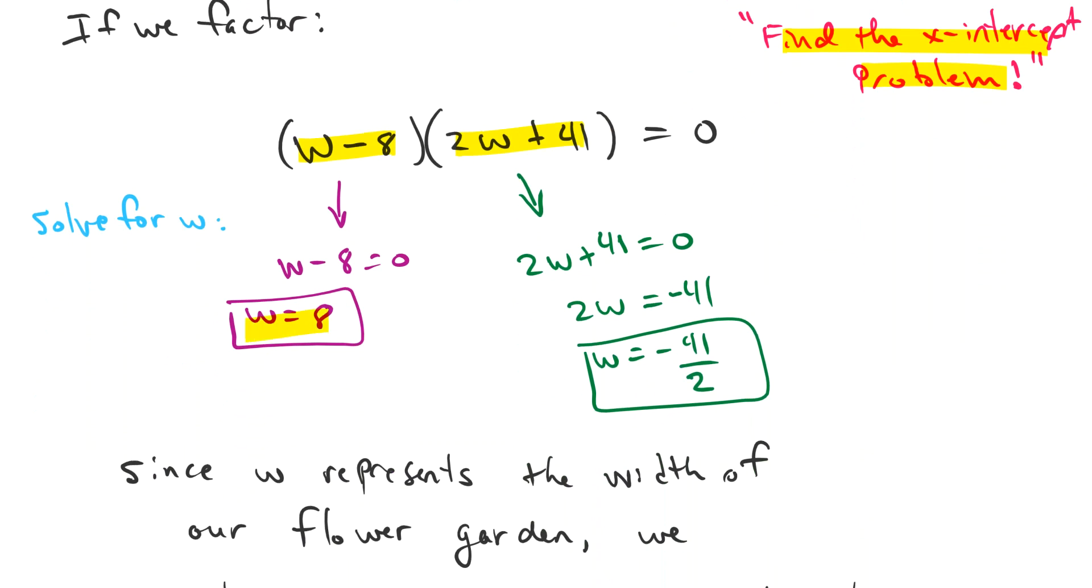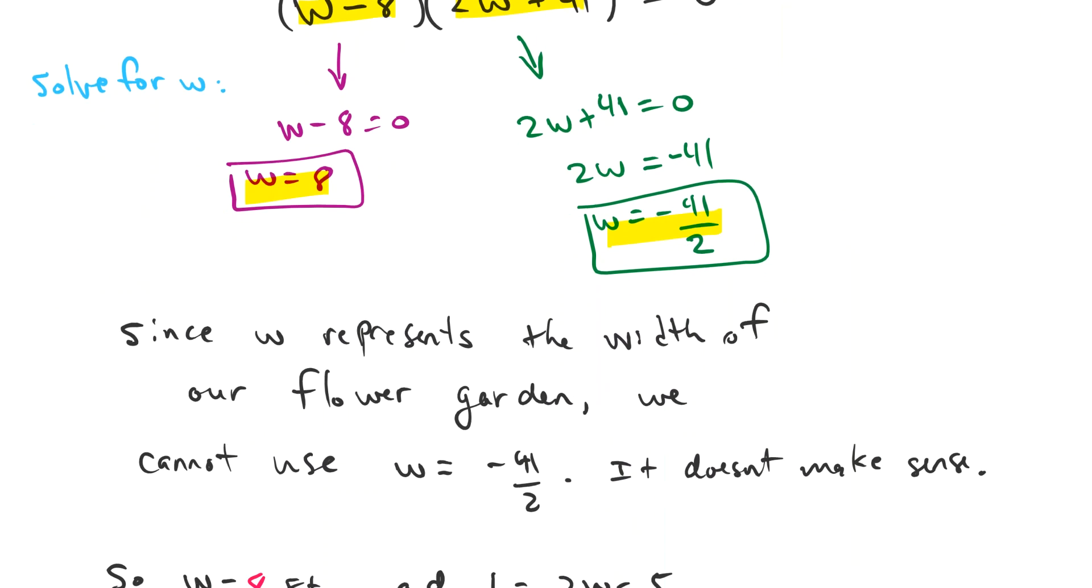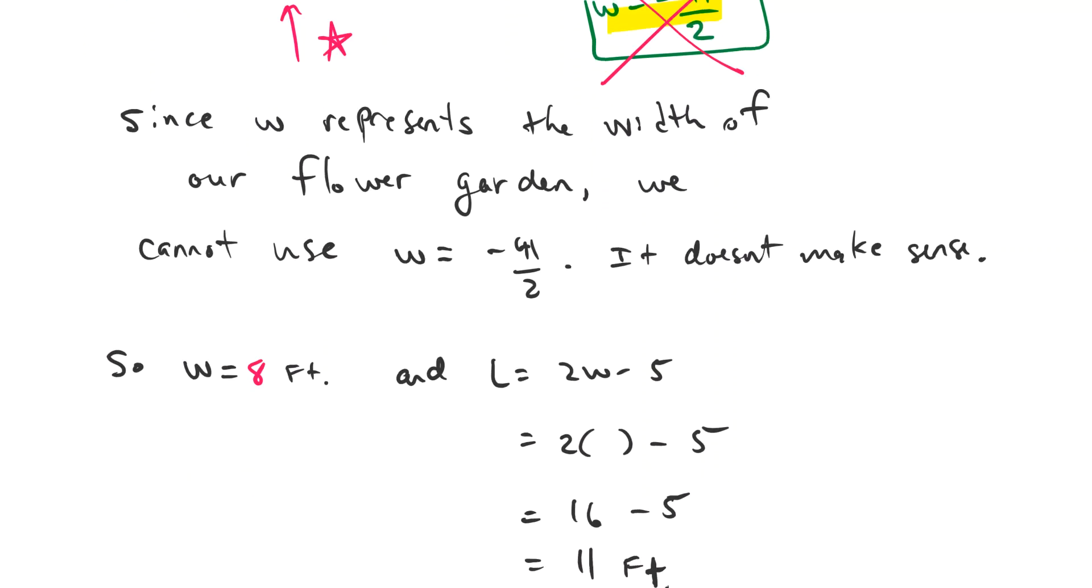The negative one though, we're not going to use, because W represents a width of a flower garden and the negative does not make sense. So that one doesn't make sense. So we're going to use this one: W equals 8. So we have 8, so our width is 8.